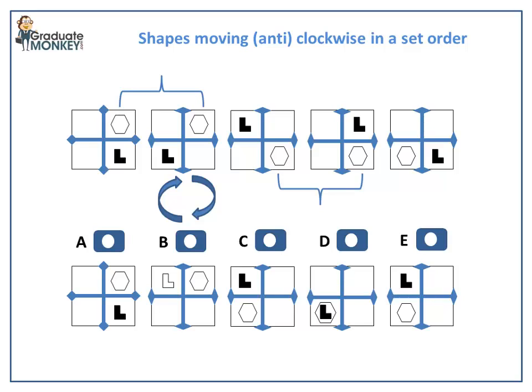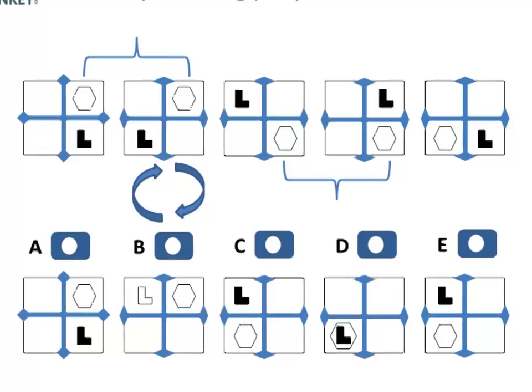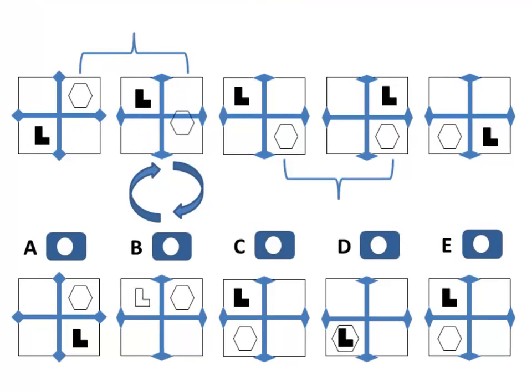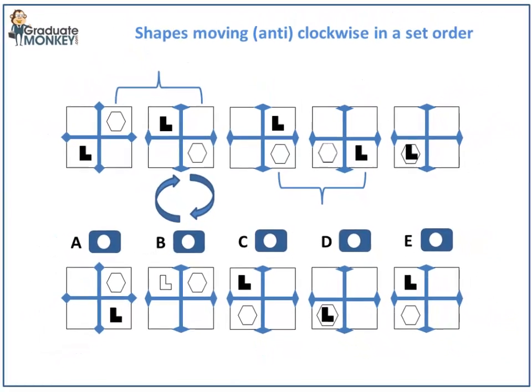However, since the L shape moves at each step the two shapes should overlap at step 6. Let's take a look at the movement. Take another look. In sum, the next pattern in the sequence should be D.